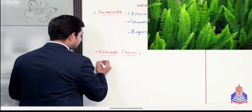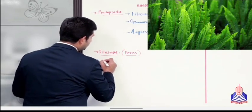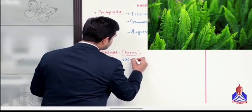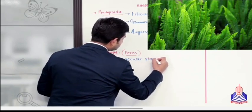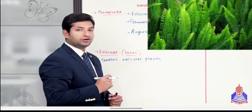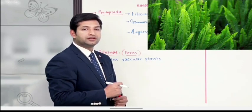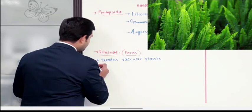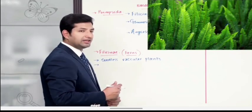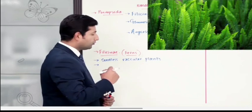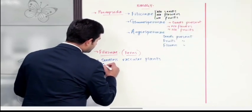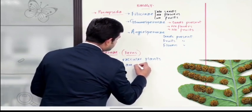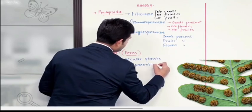All right, इसके general features हम mention कर लेते हैं। सबसे पहले यहाँ पे, the first thing is: they are seedless vascular plants. ऐसे पौदे हैं जिनके पास vascular tissues तो मौजूद हैं, xylem और phloem conducting strands भी मौजूद हैं, लेकिन इनके पास कोई बीज बनाने वाली सलाहियत अभी तक develop नहीं हुई। फिर इसके साथ ही साथ, जो इनका एक advanced feature is as compared to the previous groups: that their sporangia are present on leaves.